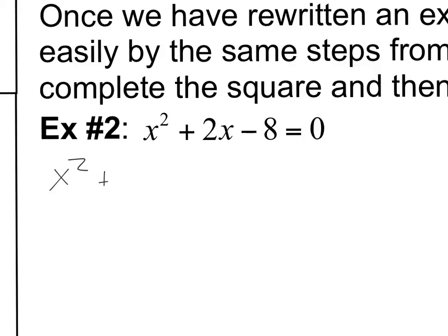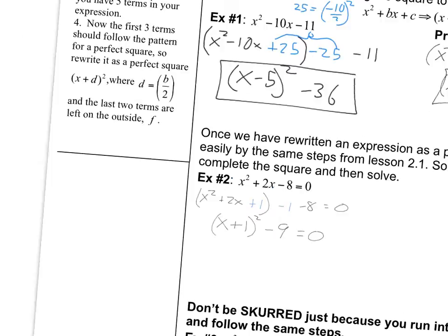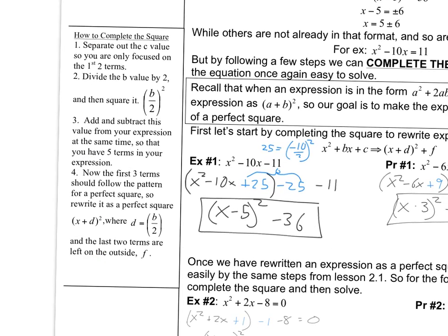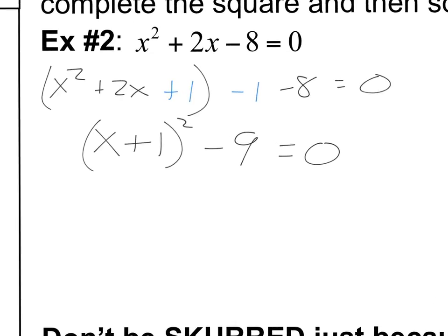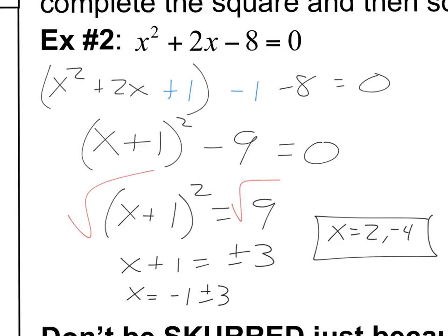Same steps as before: x squared plus 2x, write the minus 8 over here, equals 0. 2 divided by 2 is 1, and 1 squared is 1. So I add 1 and subtract 1 at the same time. This means x squared plus 2x plus 1 is a perfect square of x plus 1 squared, and on the outside I have minus 9 equals 0. I move the 9 to the other side, giving x plus 1 squared equals positive 9. Take the square root of both sides: x plus 1 equals plus or minus 3. Subtract 1 from both sides: x equals negative 1 plus or minus 3. So x equals 2 or x equals negative 4 — two solutions using completing the square.